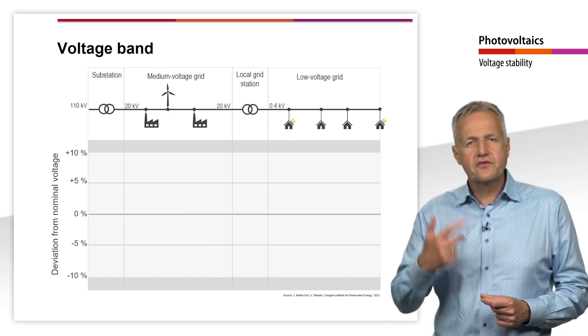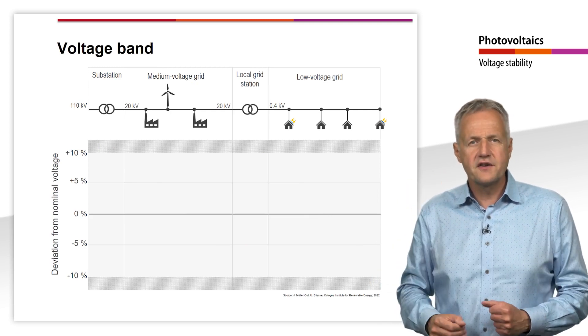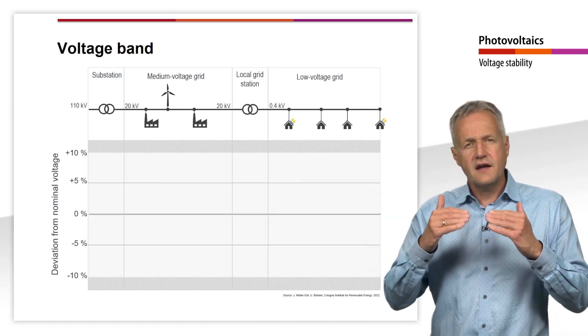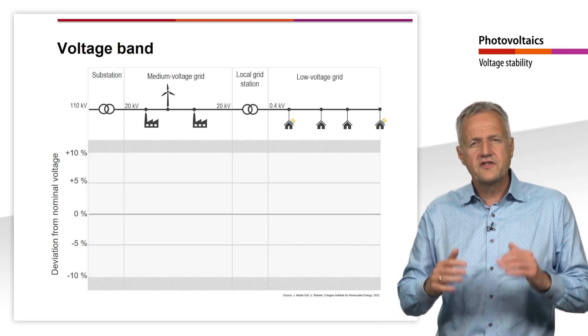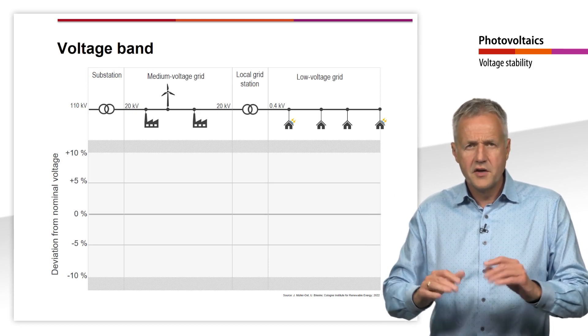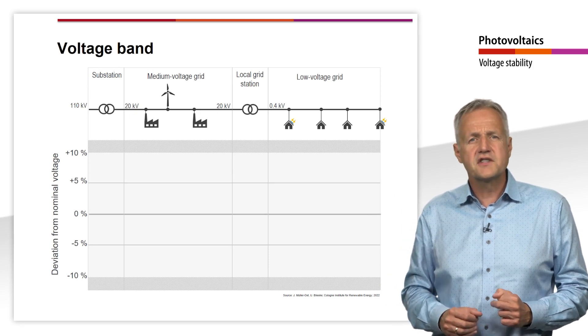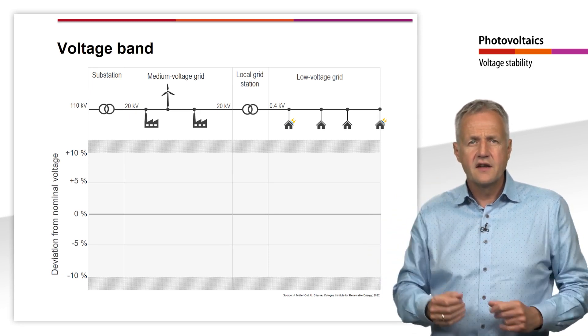To ensure that the voltage is always within the voltage band, the following two extreme cases must be considered. The highest voltage occurs when the feed-in is at its maximum but the consumption is at a minimum. To ensure that even in this case the voltage is within the voltage band, in Germany,